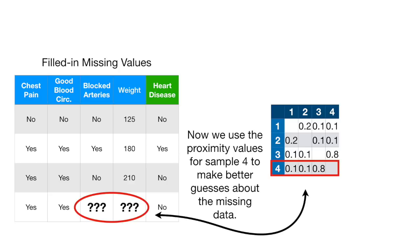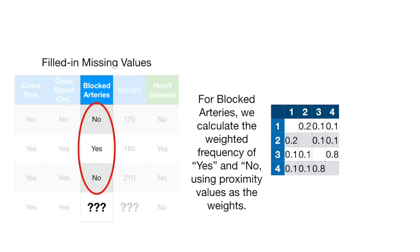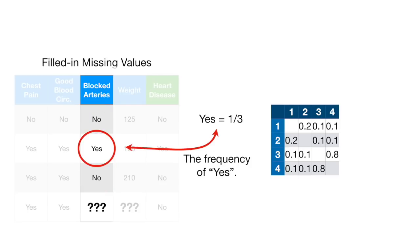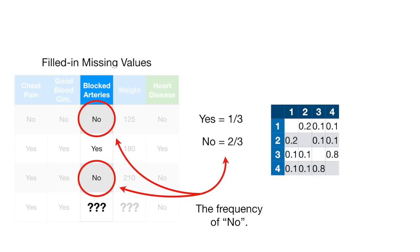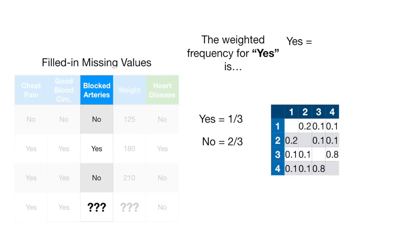Now we use the proximity values for sample 4 to make better guesses about the missing data. For blocked arteries, we calculate the weighted frequency of yes and no using proximity values as the weights. Yes occurs in one-third of the samples. No occurs in two-thirds of the samples. The weighted frequency for yes is the frequency of yes times the weight for yes.